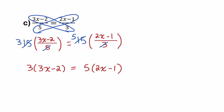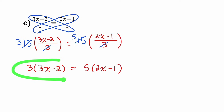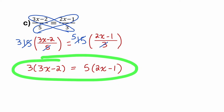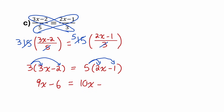The reason why that works is because of the algebra shown above. To finish solving this equation for x, I expand both sides. On the left, I have 3 times 3x, which is 9x, minus 3 times 2 is 6. And on the right, 5 times 2x is 10x, minus 5 times 1 is 5.